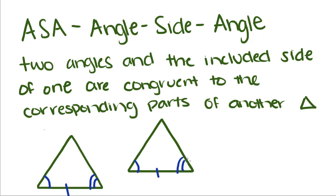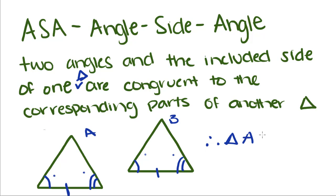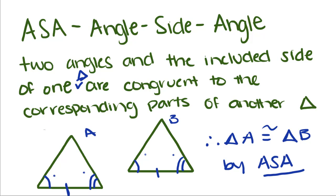For angle-side-angle, we know that two angles and the included side of one triangle are congruent to the corresponding parts of another triangle. I know that this angle and this angle are congruent, this angle and this angle are congruent, and since this side, which falls between these two angles, is congruent to this side, which falls between these two angles, therefore triangle A is congruent to triangle B by angle-side-angle. We always want to give a reason as to why they're congruent.